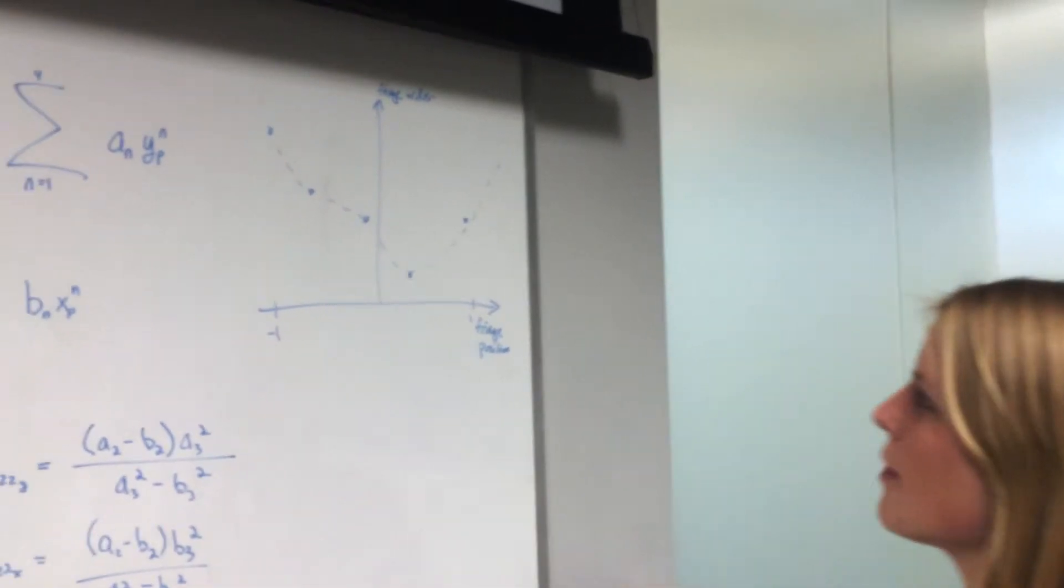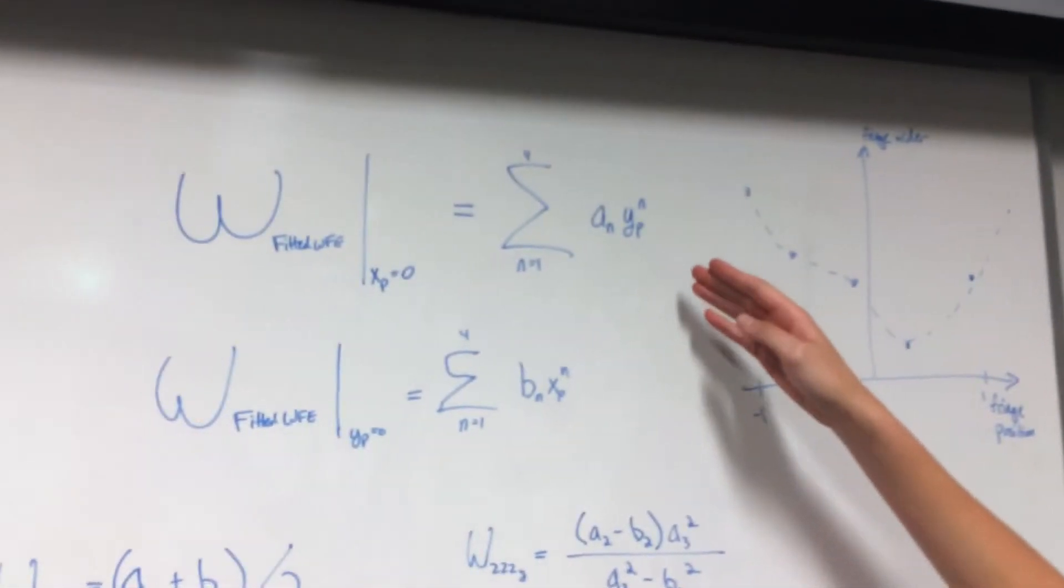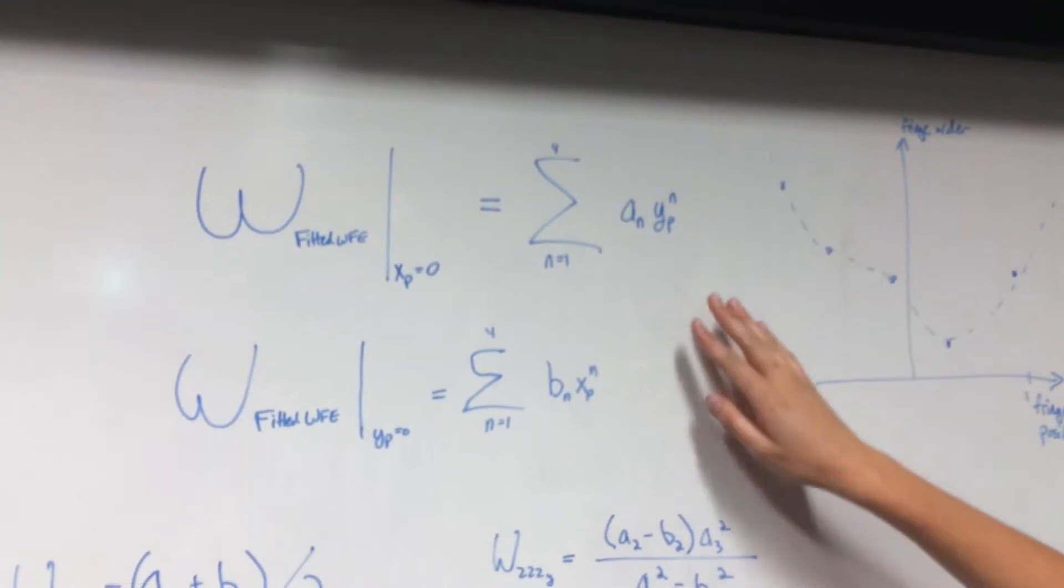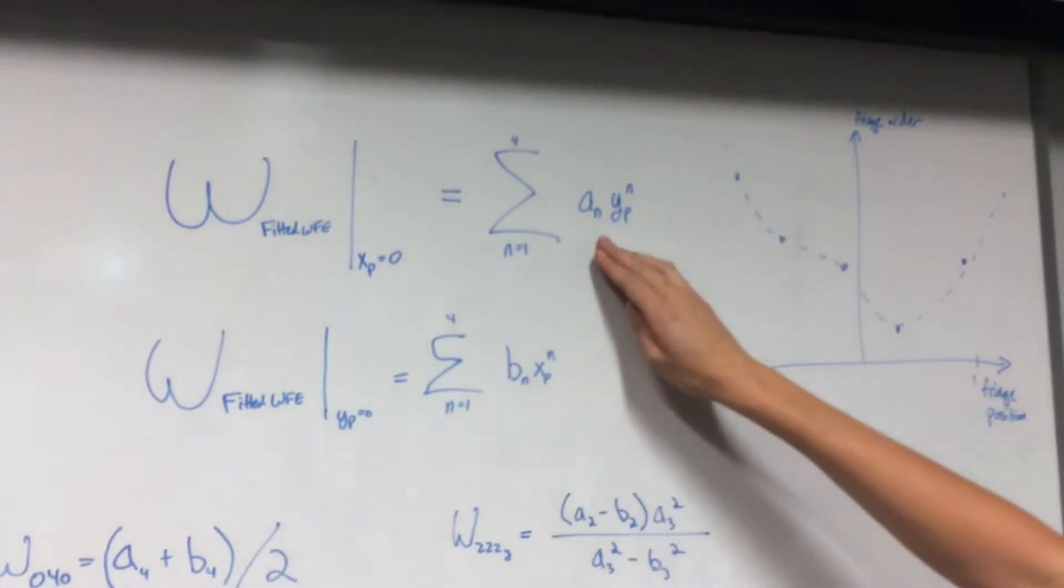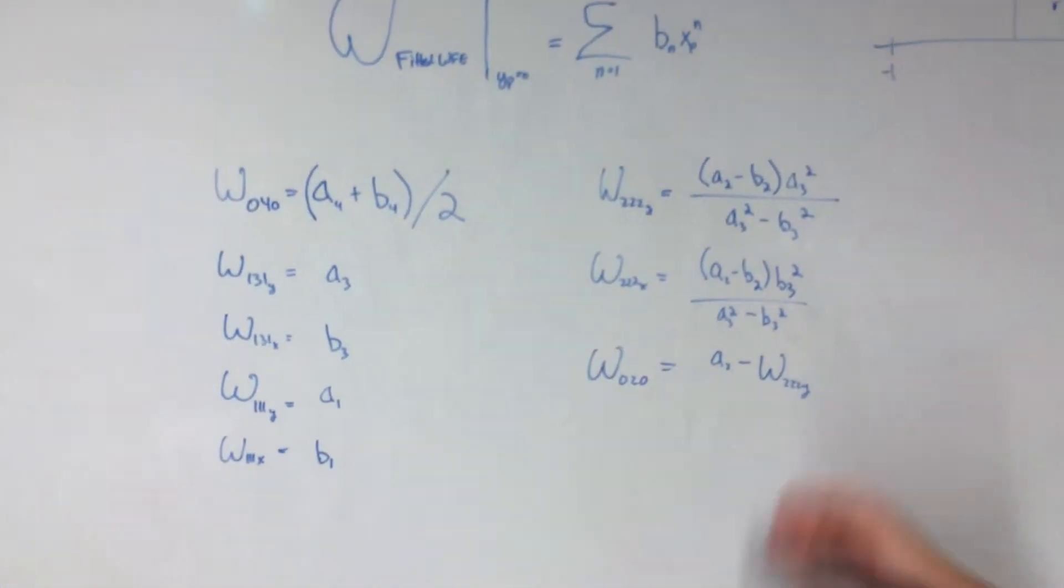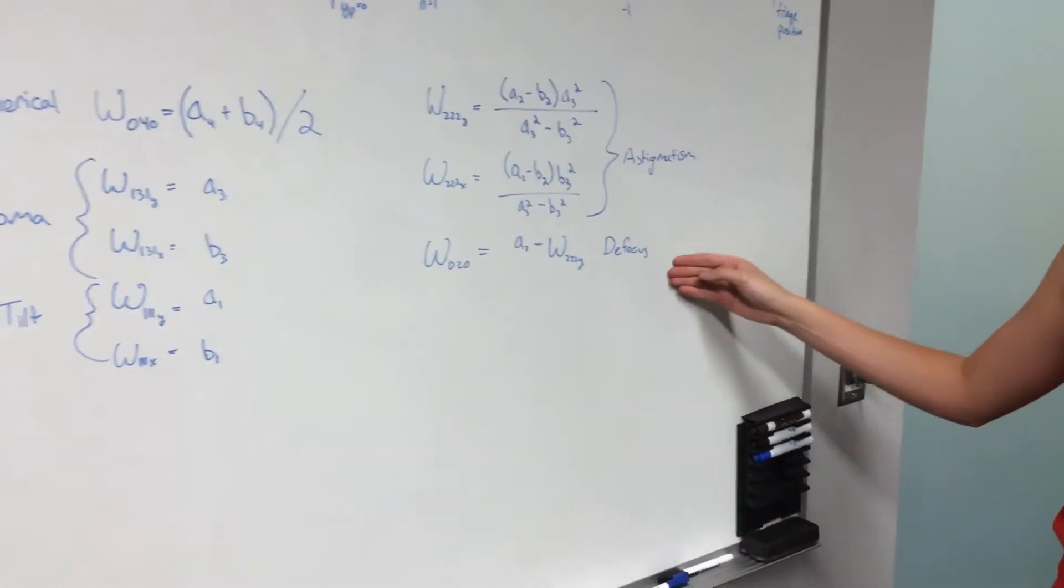So for the least squares fitting method, we plot the fringe order versus the normalized fringe position, and we get a series of points. Then we do a poly-fit with a third-order polynomial, and we do this on both the x-axis and the y-axis. And we can find these coefficients ans and bns, and we use those to find the different aberrations. So we've got spherical, x and y coma, x and y tilt, x and y astigmatism, and defocus.